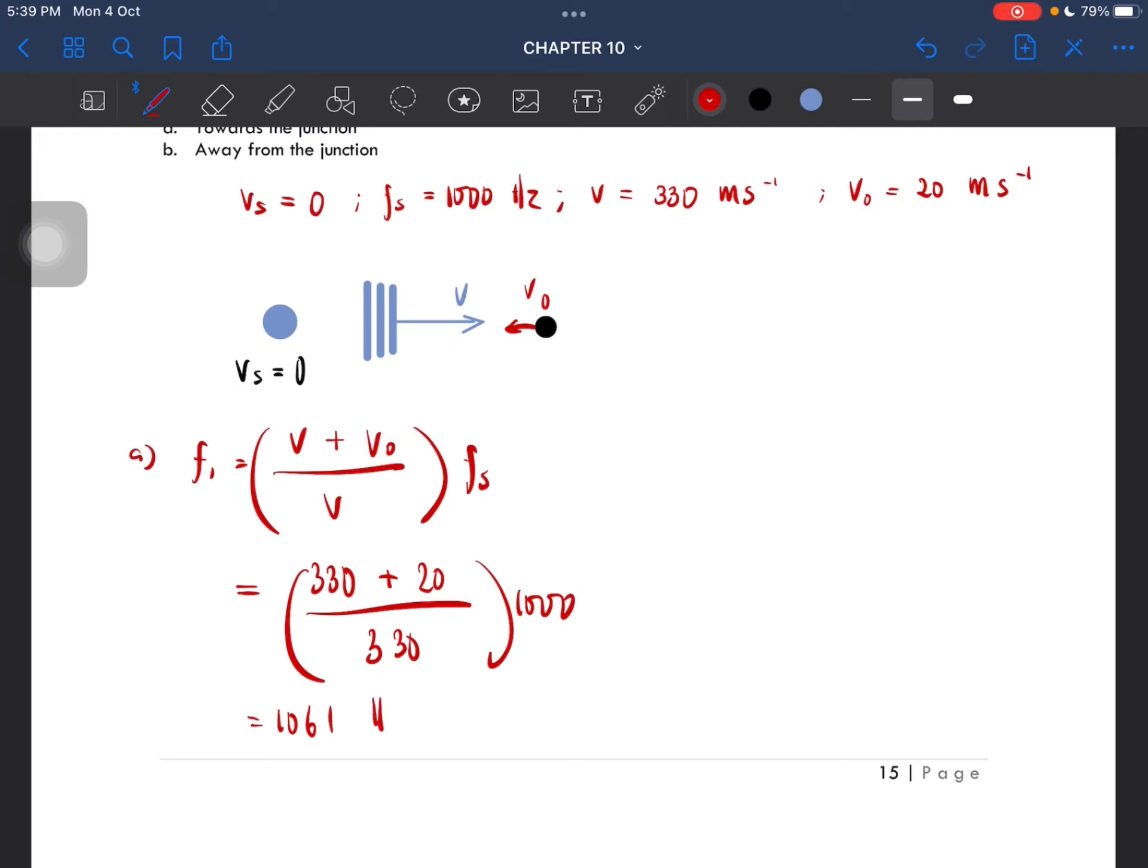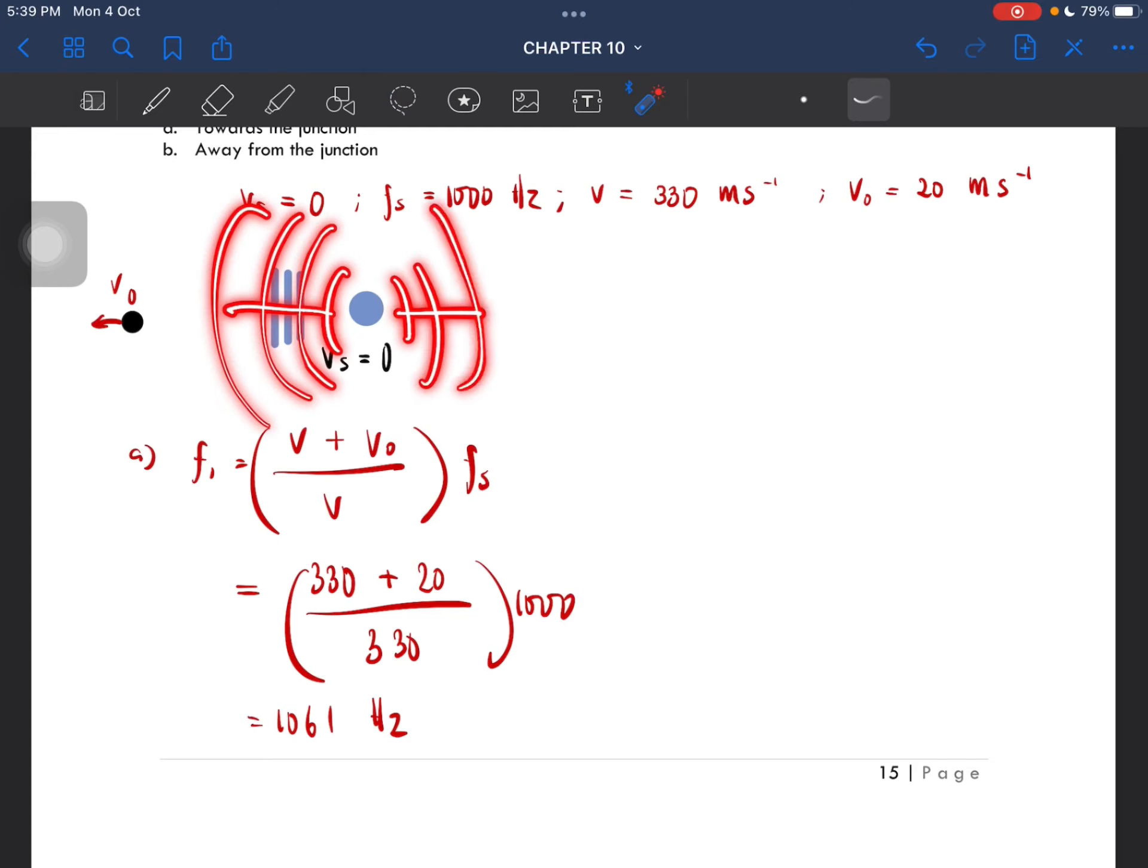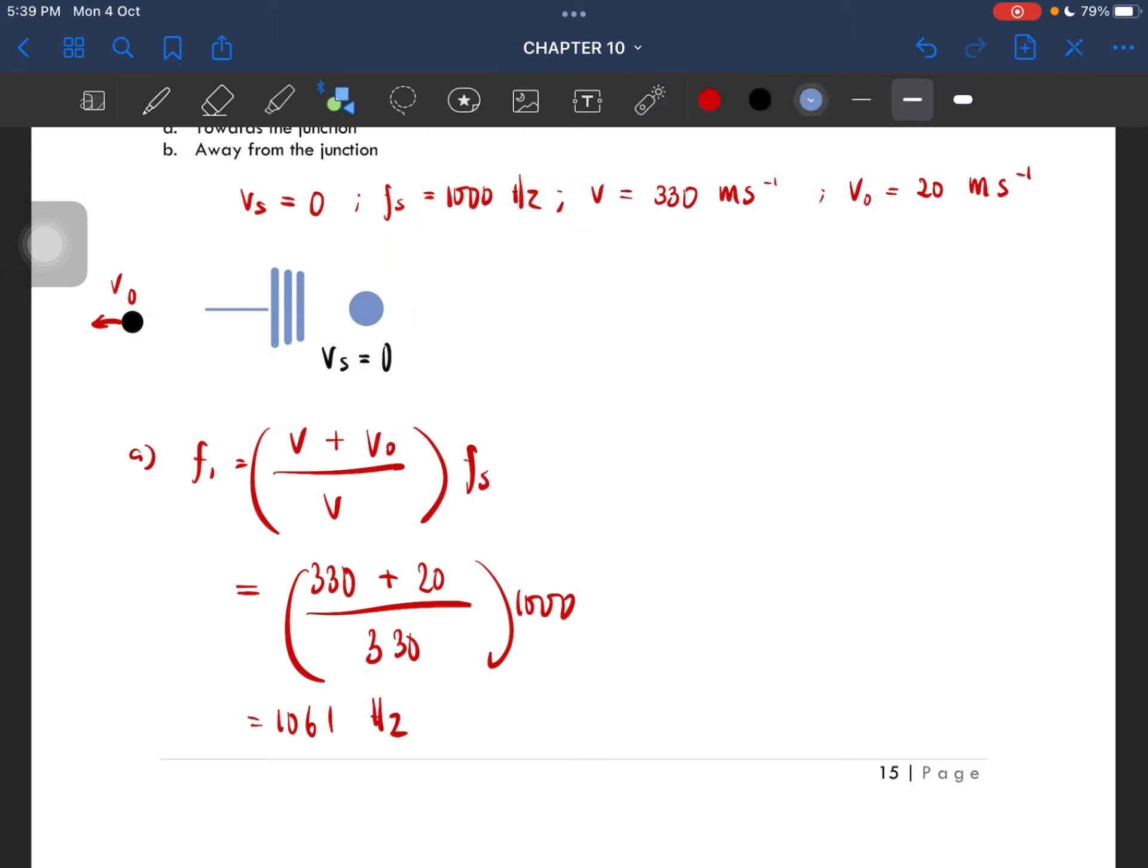Okay, so now when it is moving away from the junction, remember sound can be produced at both sides. The direction of the speed of sound, they are produced both here and then here.